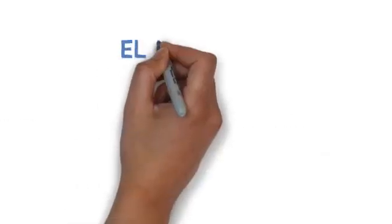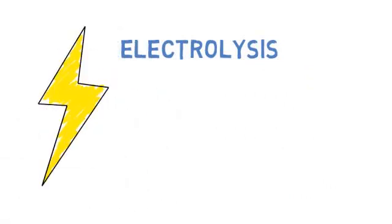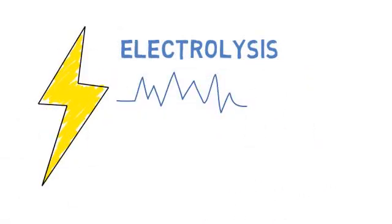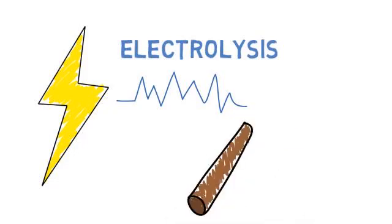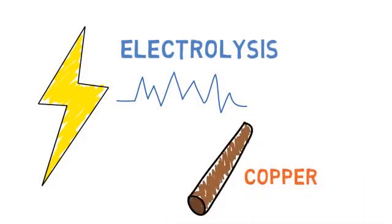Another method we can use is electrolysis. This is where you extract the metals by passing electricity through its solution. You can also split up metals with copper. People are developing new methods to make the extraction of metal more efficient all the time.